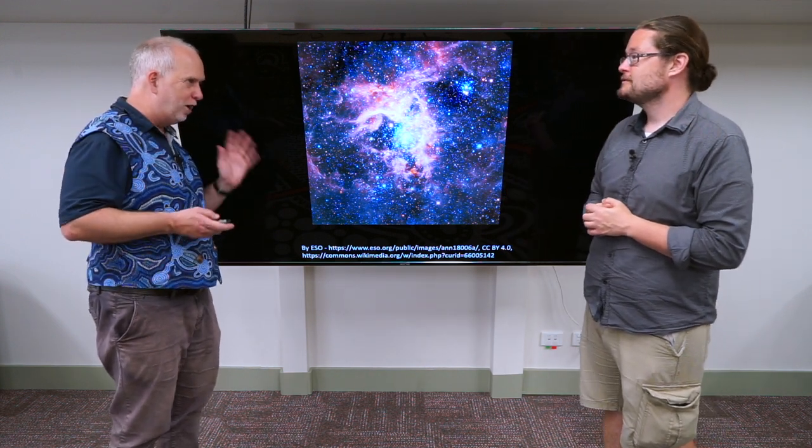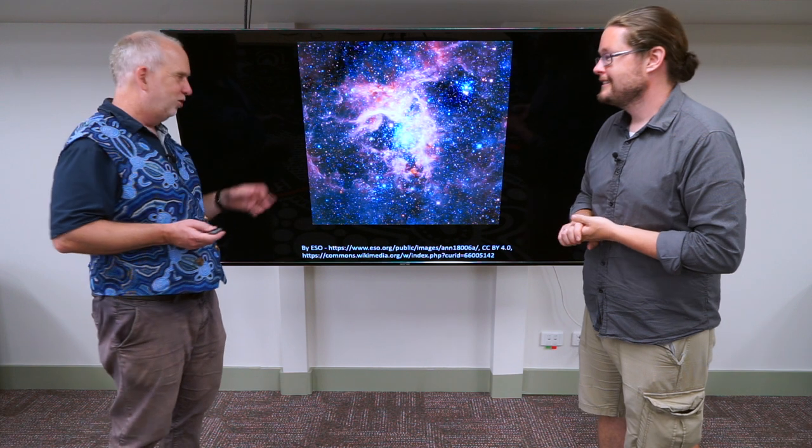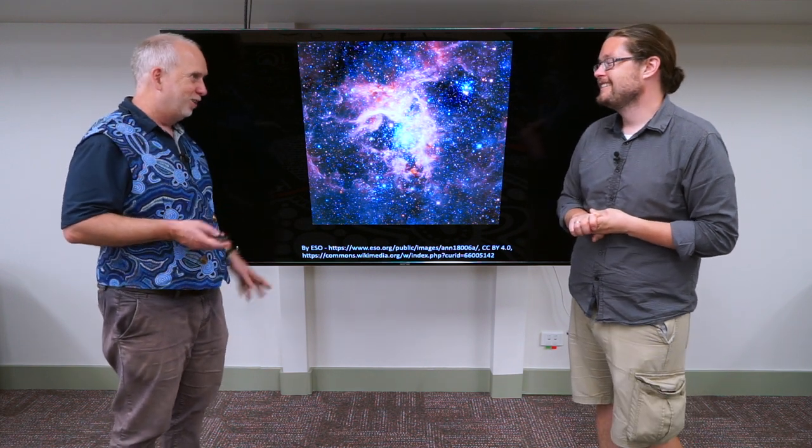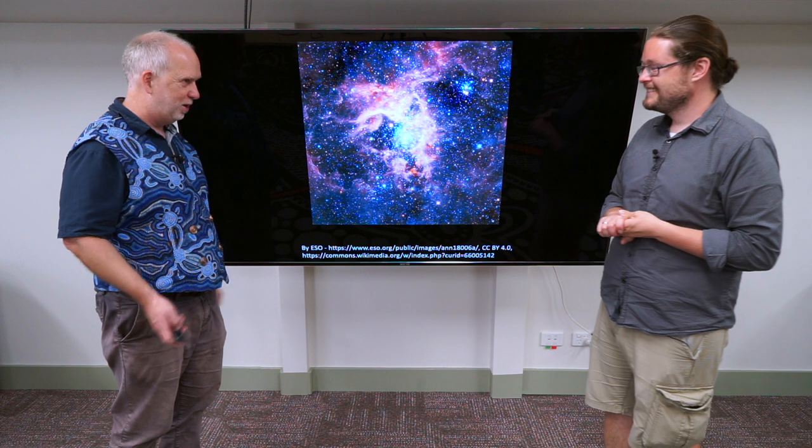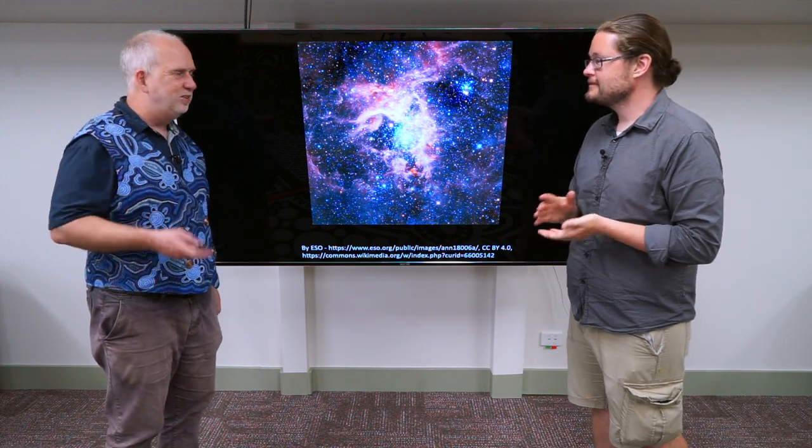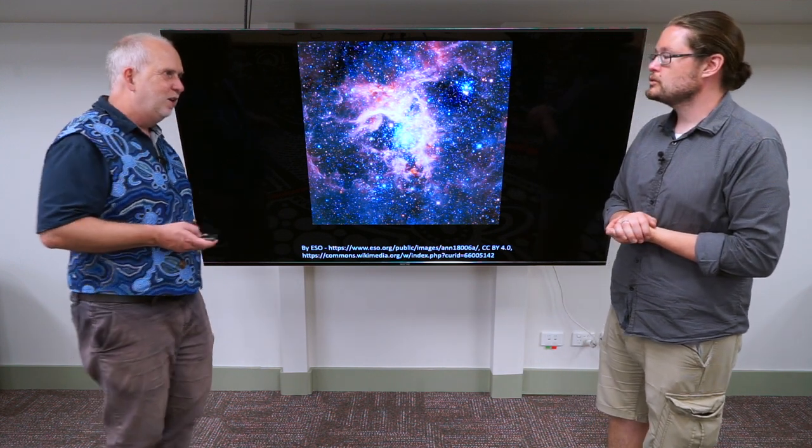We actually subdivide the categories, so O star, we can call it an O1, O2, O3, O4, so the lower number O stars are going to be the very hottest, the very most massive, whereas the O eights and nines would be like the ones in the Orion Nebula.